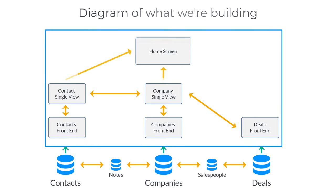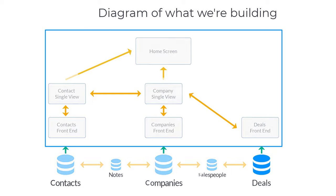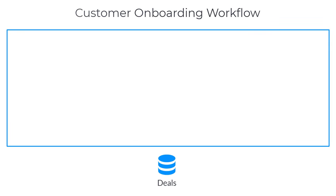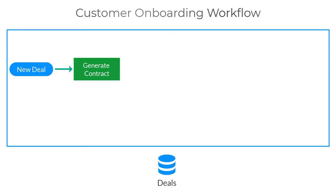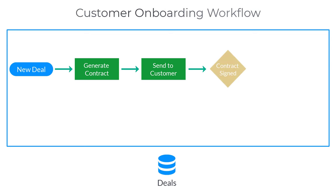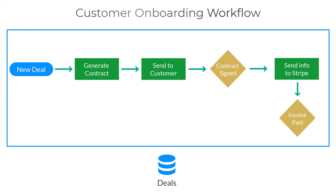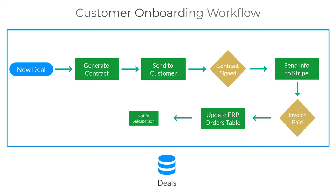The really powerful part comes into play with the deals. We have custom workflow elements in the form of a customer onboarding process. When a new deal is submitted, the system will generate a contract and send it to the customer. When that is signed, it will send the customer info to our payment processing software, Stripe. And finally, when the invoice is paid, it will update our ERP system and notify the salesperson.